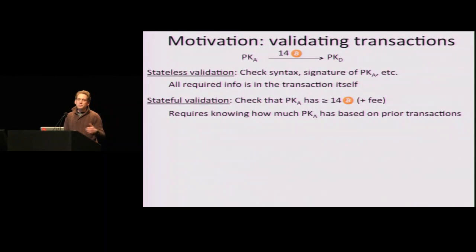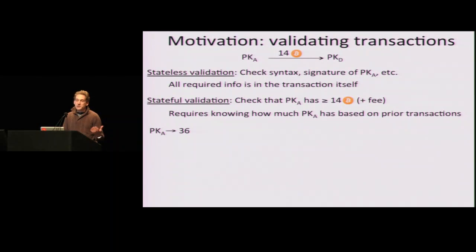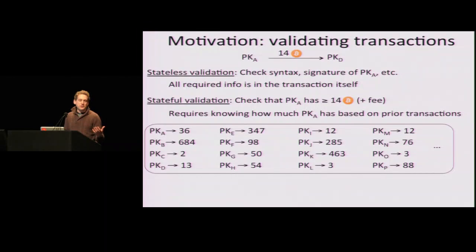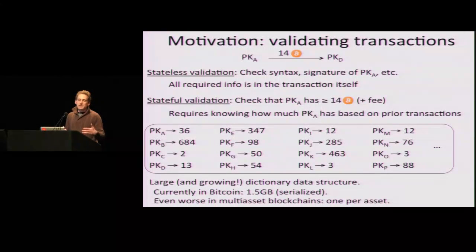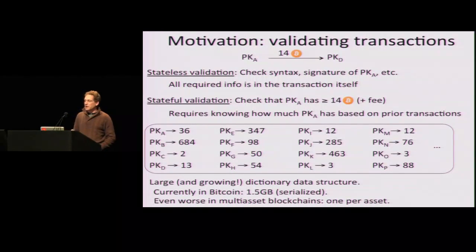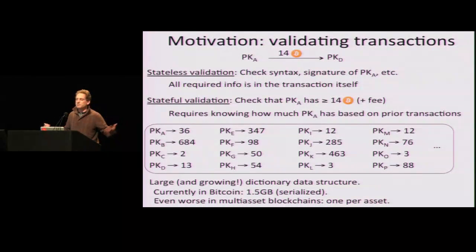But then the big piece that's hard to validate is actually making sure that Alice actually has those 14 bitcoins or more to give away. That part is stateful — you have to know how much Alice has based on prior transactions. You're going to have to have this key-value store of public keys mapped to current amounts, and you're going to have to look things up to validate transactions. The problem with this dictionary data structure is that it's big and it's growing. Today it's about one and a half gigs in Bitcoin if you serialize it, and things get worse if you have a blockchain for many assets. This becomes a problem.